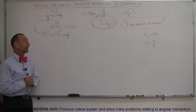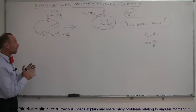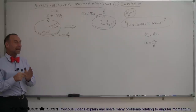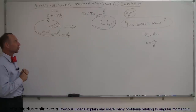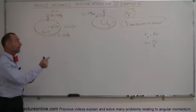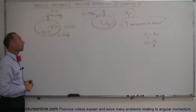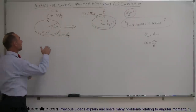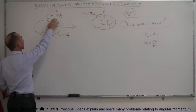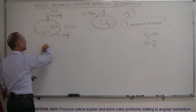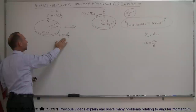Welcome to Electron Online. Here's another very interesting example dealing with angular momentum. We have a little child with a mass of 40 kilograms standing still at the edge of a merry-go-round that has a mass of 200 kilograms.